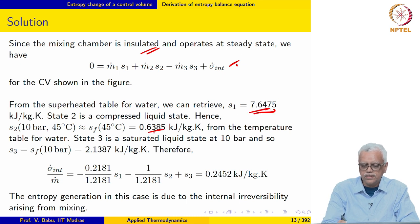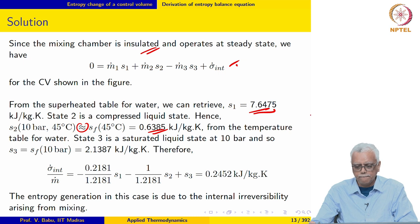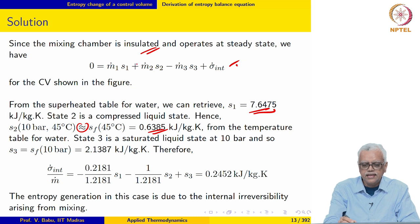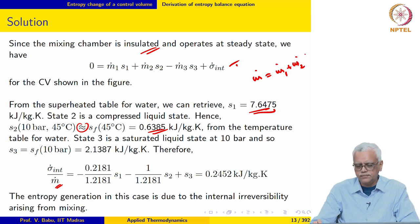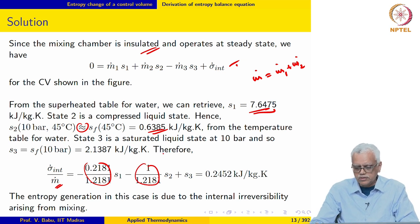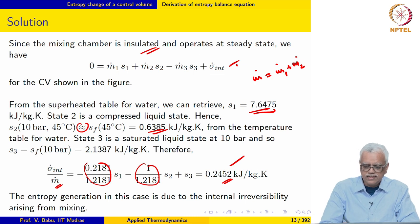We can retrieve the following property values from the tables. For the compressed liquid state, we approximate S_f(T,P) as simply the specific entropy of the saturated liquid at the same temperature. Dividing both sides by m_dot and substituting the values derived in the previous course, we end up with σ̇_int / m_dot equal to 0.2452. It is a positive number — it must be positive since σ̇_int ≥ 0. The entropy generation in this case is entirely due to internal irreversibility from mixing.